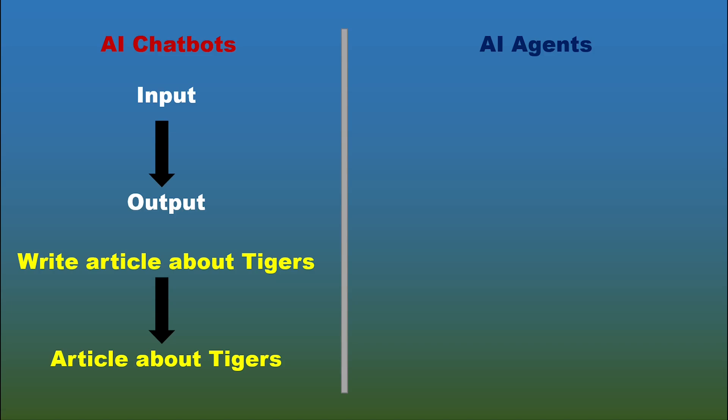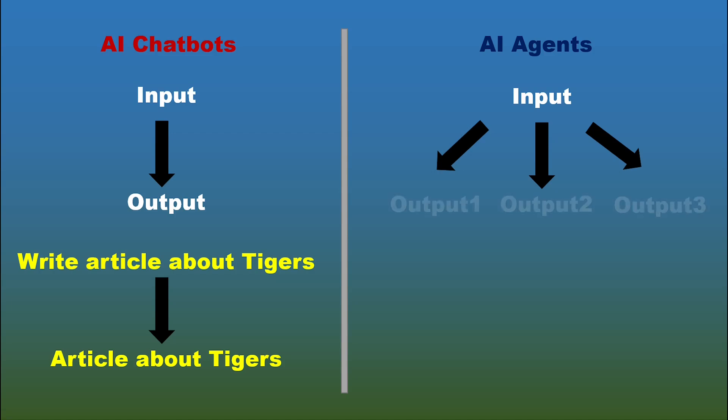Whereas an AI agent is designed to perform multiple tasks at the same time. It gets a single input, but can generate multiple outputs. Therefore, they are considered as an advanced version of AI chatbots and the future of AI.